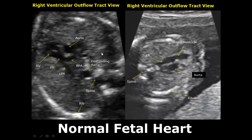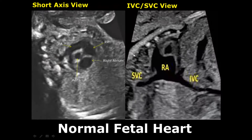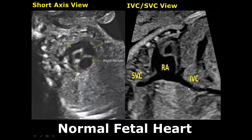The short axis view gives us a cross-section of the heart. We can see the aorta, the right ventricle, and the main pulmonary artery. The IVC/SVC view gives us a longitudinal view of the superior vena cava and the inferior vena cava along with the right atrium.